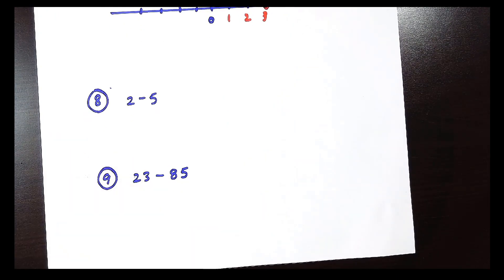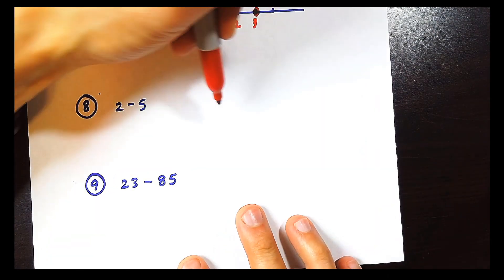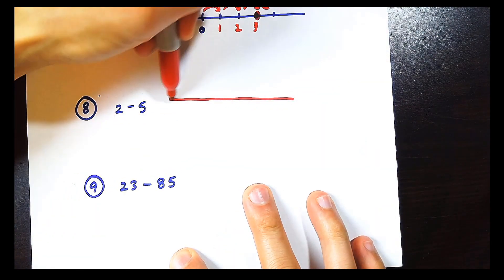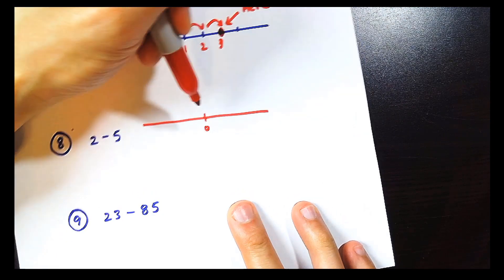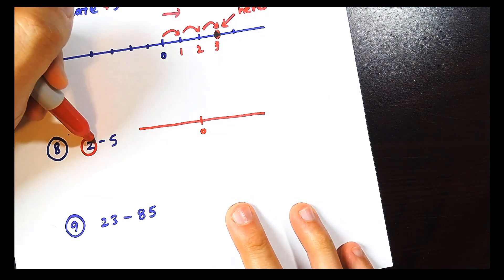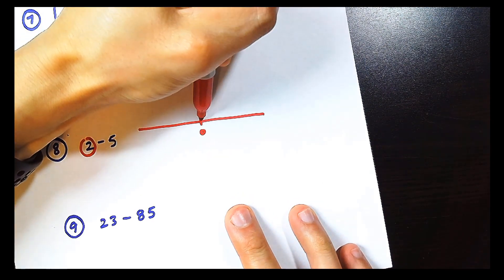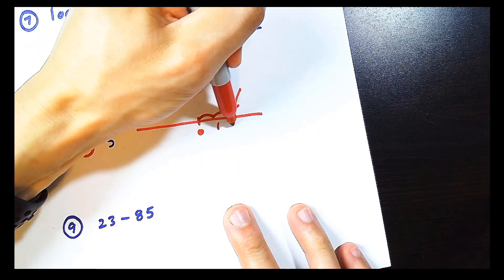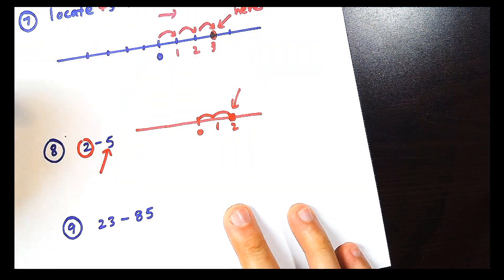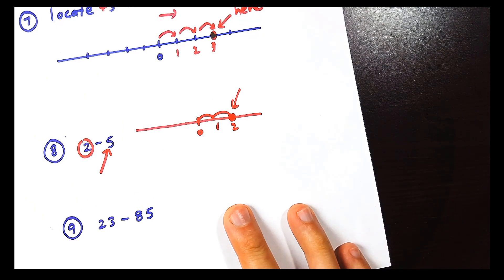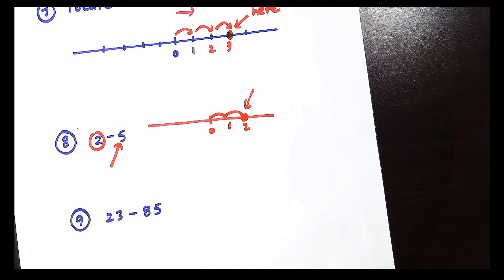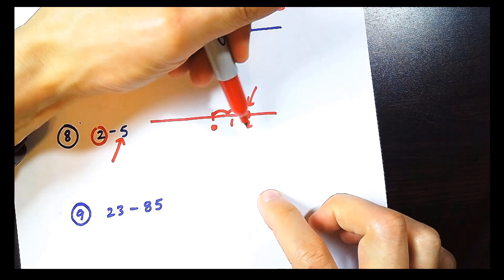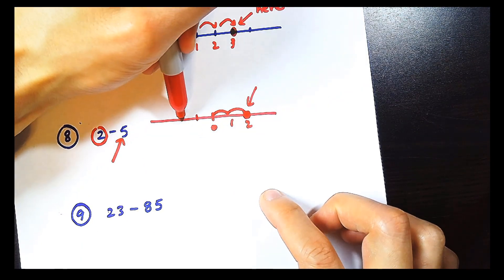The next question is 2 minus 5. If you have 2 dollars, I'll just draw a nice number line here. This is 0. Imagine we start with 2. So this is 1 hop, 2 hop. We start over here. 1, 2. But we're going to take away 5 dollars. Minus 5. So 2 minus 5.